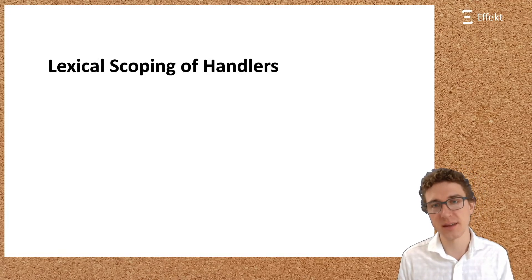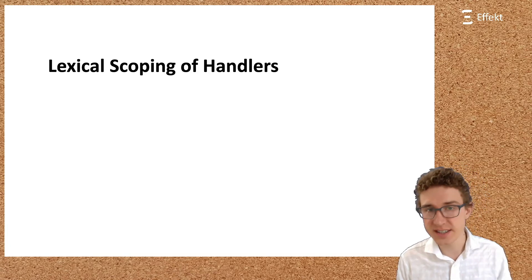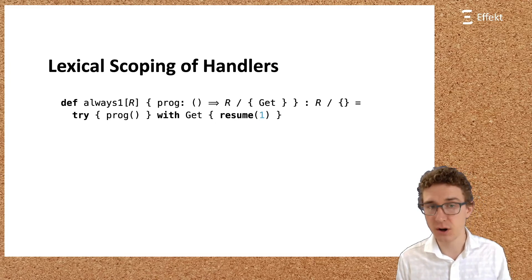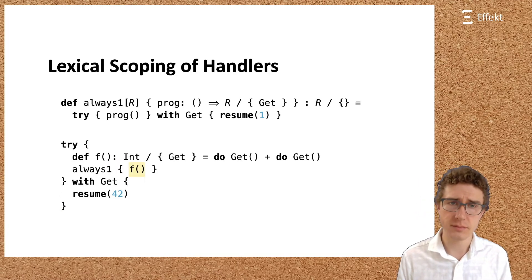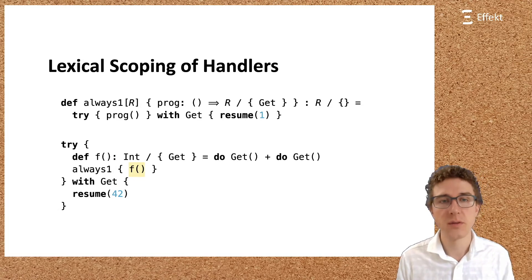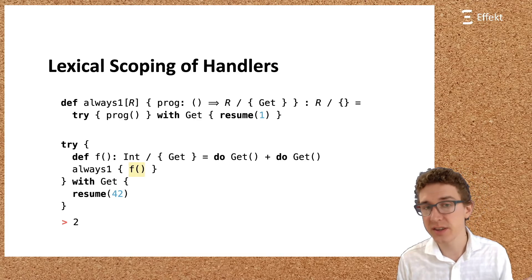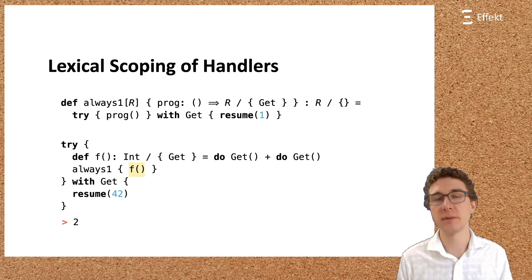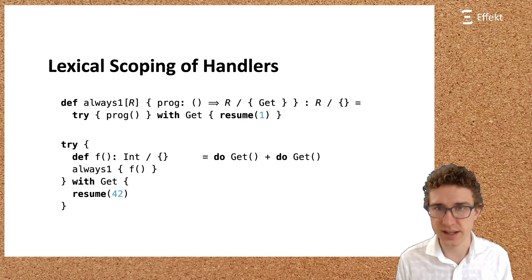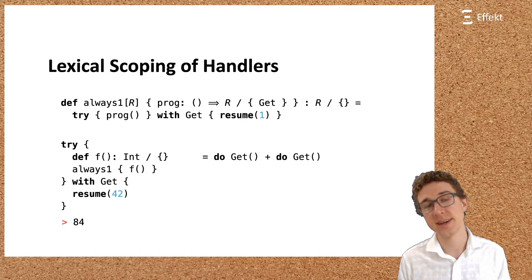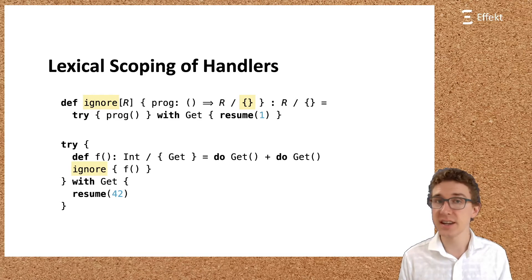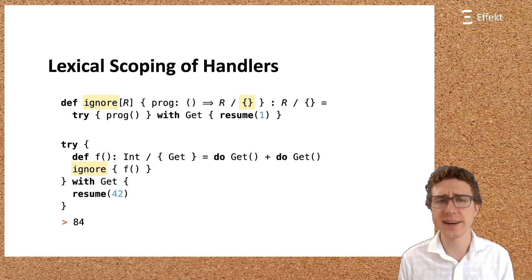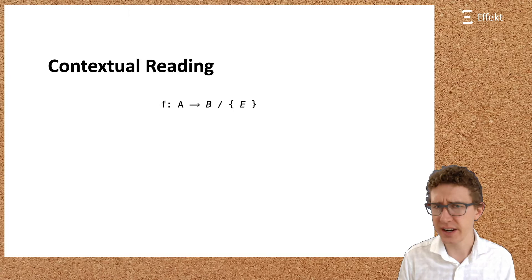I want to highlight one important point. Like other recent approaches to effect handlers by Zeng and Myers, or Bernatzky and colleagues, in the effect language we established some form of lexical scoping of effect handlers. To understand this, let us assume the following higher order function. It takes a block prog and handles get by always resuming with one. So this example will return one. Similarly, running f under always one will yield two. However, if we not change the annotated type of f to not mention get anymore, the get effect has to be handled at f's definition side and now the example yields 84. Similarly, if we change the annotated type of always one to not mention get, the handler in its implementation does not handle anything, and our example prints 84 regardless of the effect annotation on f.